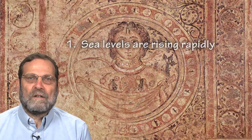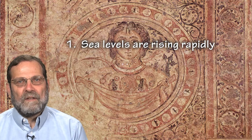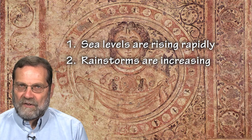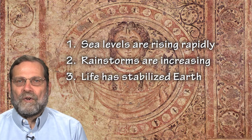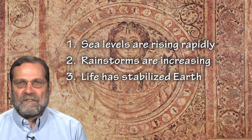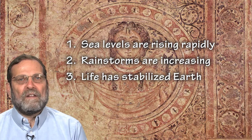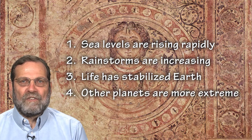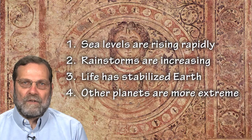The major points of this segment are: global average sea levels are rising rapidly; global average precipitation and storm intensities are increasing; life on Earth has stabilized its physical environment and chemical composition; and lastly, the climate variations on other planets are more extreme than on Earth.